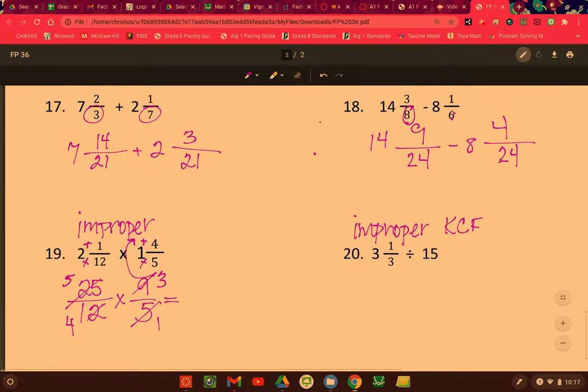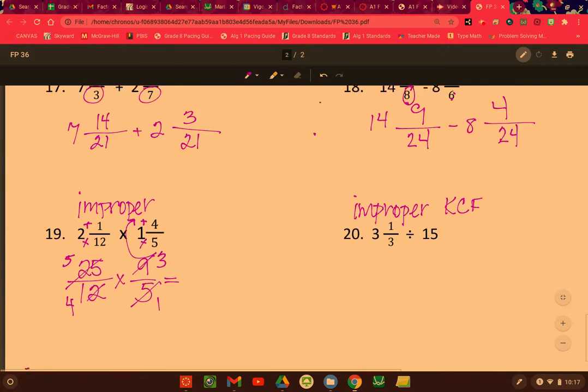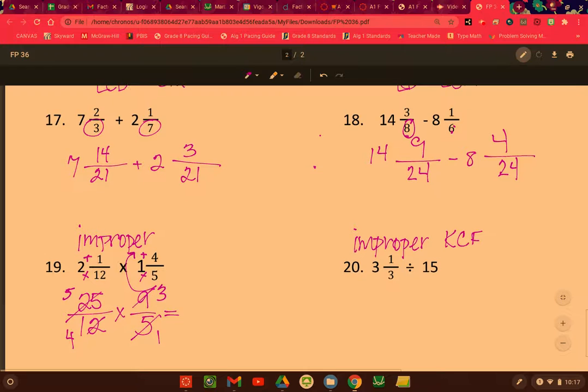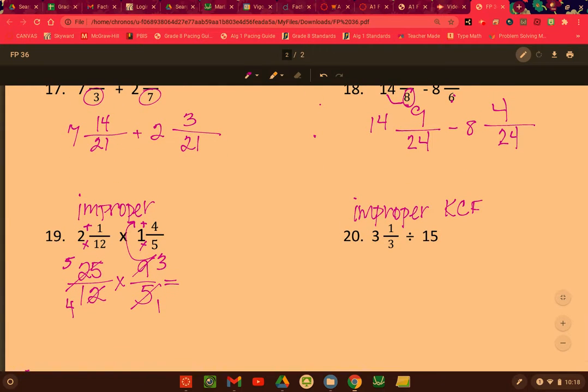As long as it's in simplest form, meaning you can't simplify with common factors, improper is totally fine. Some of you like to make, so for 17 and 18, some of you like to make those improper and then do your math. I don't even want to begin to think what 14 times 8 plus 3 is. Because that's going to be giant and I'm going to make a mistake. If you want to do it that way, you certainly can. I just feel like that's making life a little harder. Try to keep life simpler if you can.